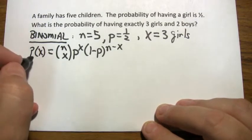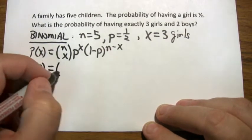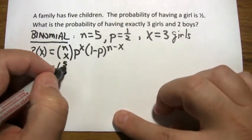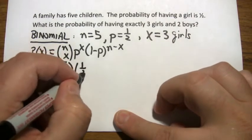So all we have to do is evaluate this at x equal to three. When n is five, x is three, p is one-half.